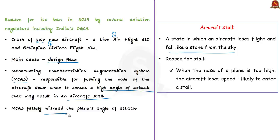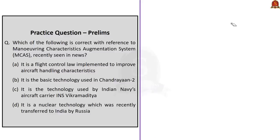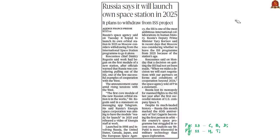Presently, though the Boeing 737 MAX 8s are allowed to overfly India, they continue to be banned for commercial operations in the country due to their involvement in the above two air crashes.